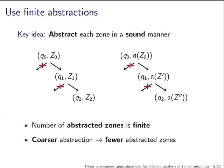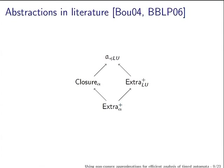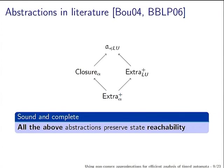The challenge is to come up with coarser abstractions while keeping the soundness constraint. Several nice abstractions have been defined in the literature, showing a hierarchy with respect to inclusion. For a given zone, the extra-plus abstraction is contained in the closure, which is contained in A. These two (extra-plus and A) are incomparable with respect to inclusion. You want to make use of the biggest abstraction.